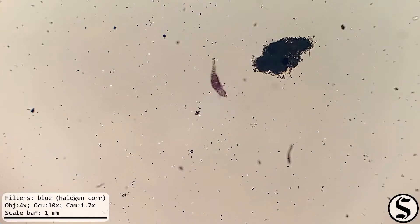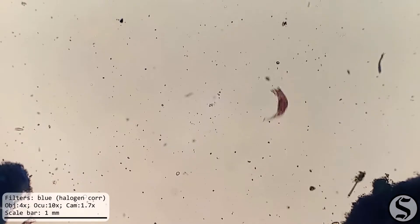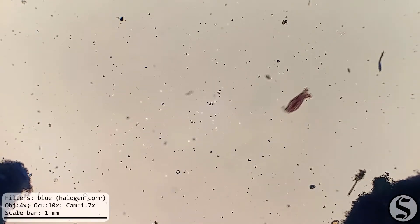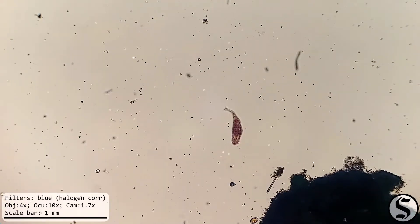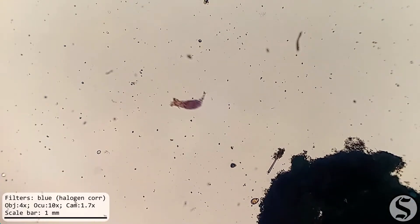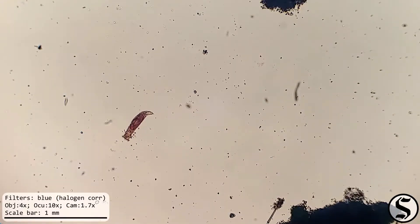Now under the microscope, we've got a rotifer swimming around. This is a bdelloid rotifer, which we can tell just from the way it's moving around.